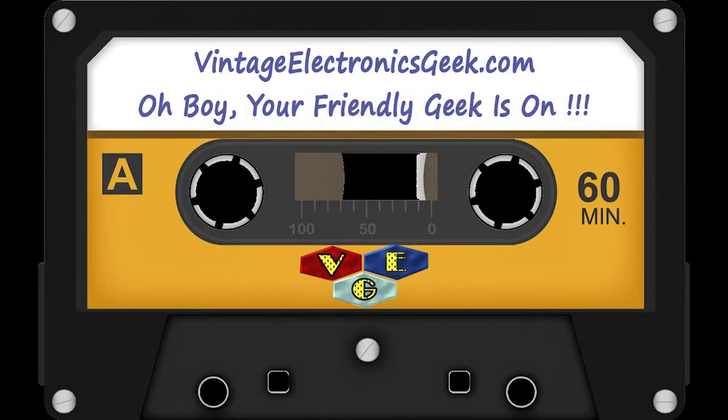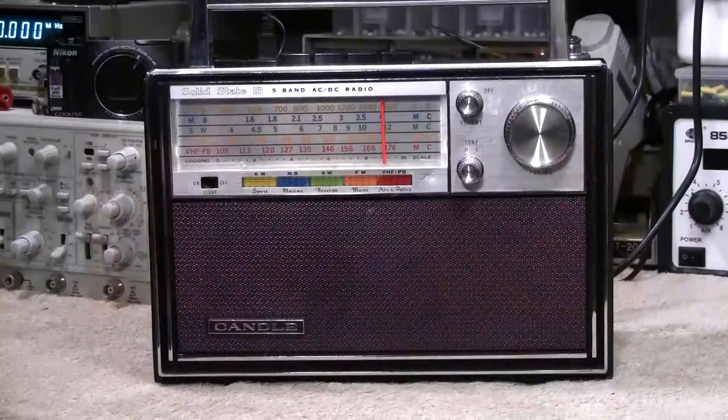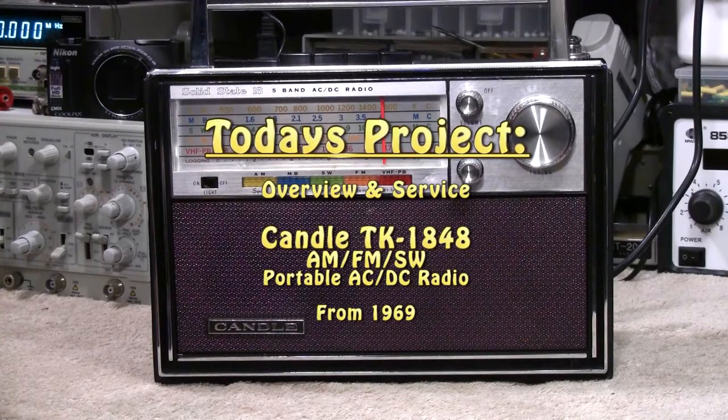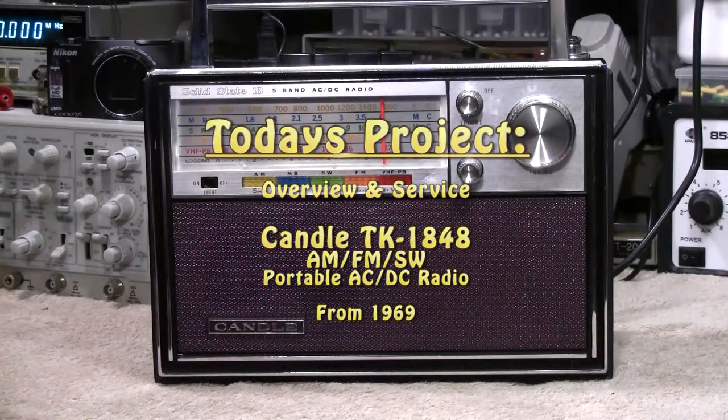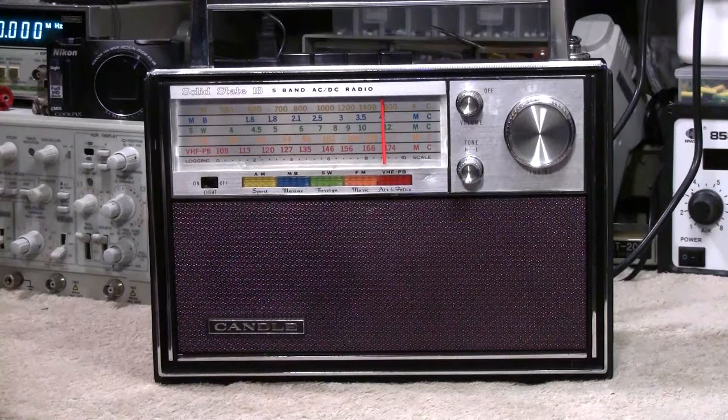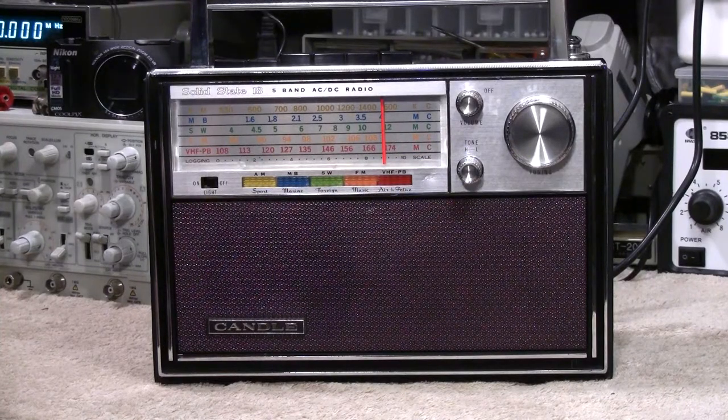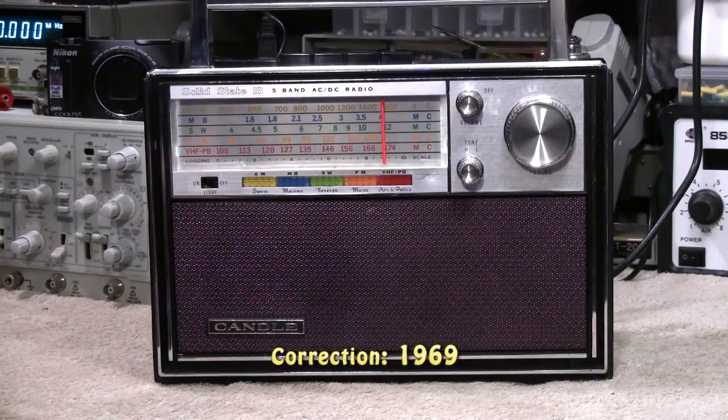Hello everybody and welcome to another video brought to you by me, Jack VintageElectronicsGeek.com. On today's video we're going to clean up and check out this Candle model number TK-1848 radio. This radio comes from about 1968 where it sold for just under $40 at your local Walgreens and other stores.